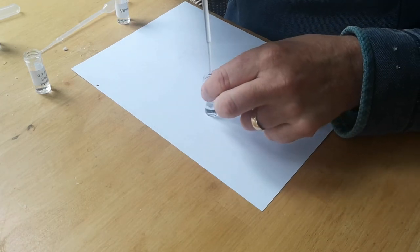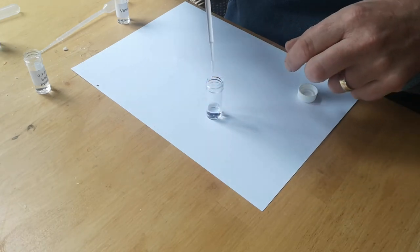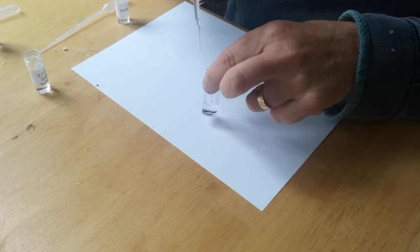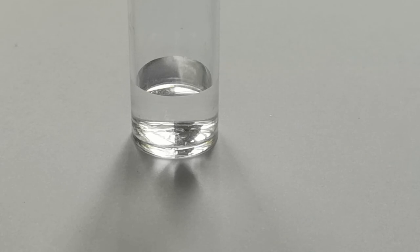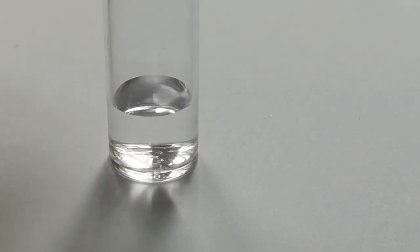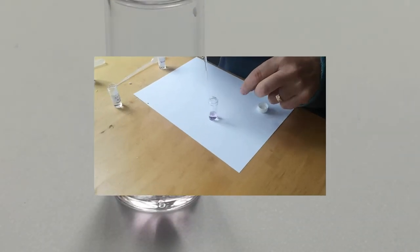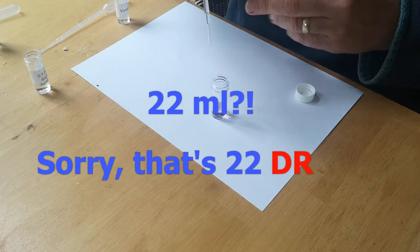So when it gets close you then start to give it a bit of a shake between drops. Eighteen, nineteen, twenty. And the idea is that you stop when the pink color stays. Twenty-one, twenty-two. That's looking just about it. So there we are. So 22 milliliters.